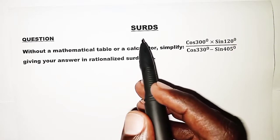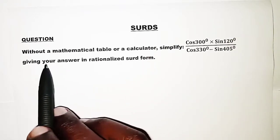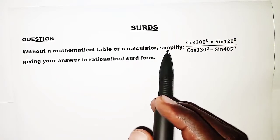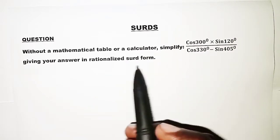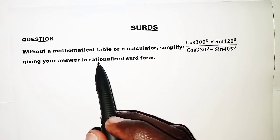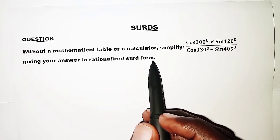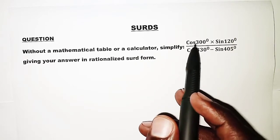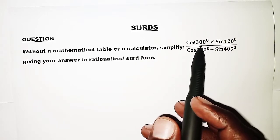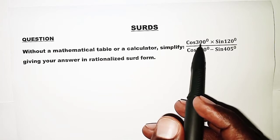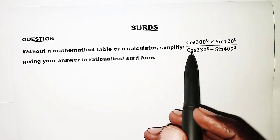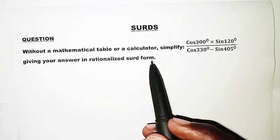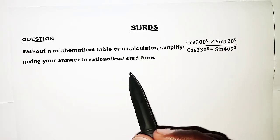Welcome. The topic today is search and the question we have here is: without a mathematical table or a calculator, simplify the following giving your answer in rationalized surd form. The first thing we are going to do is to express the values 300, 120, 330, and 405 as their acute equivalents.